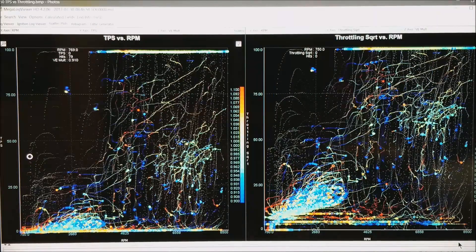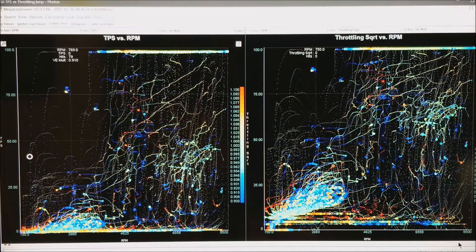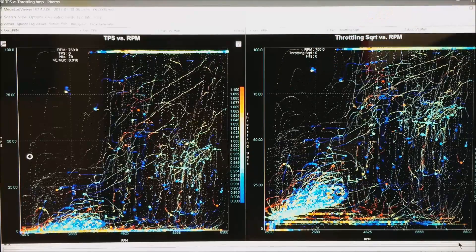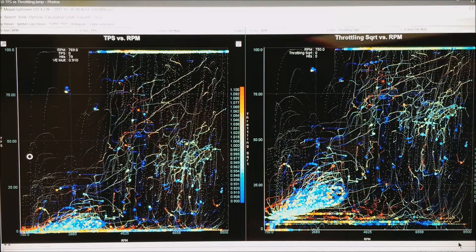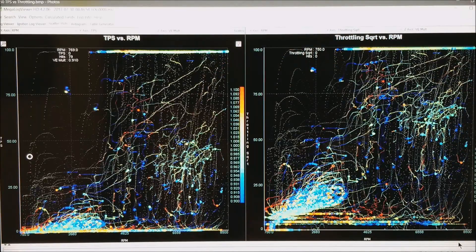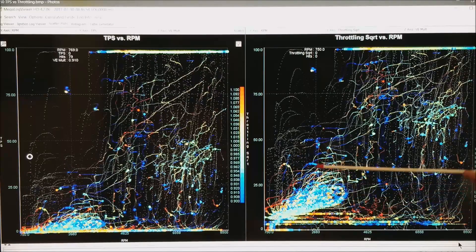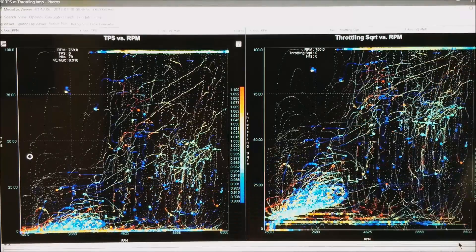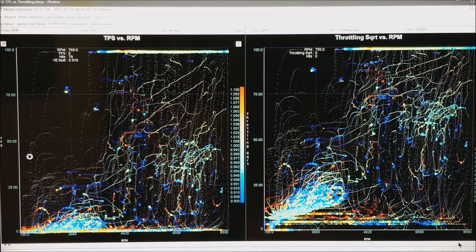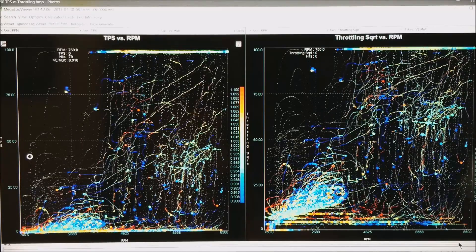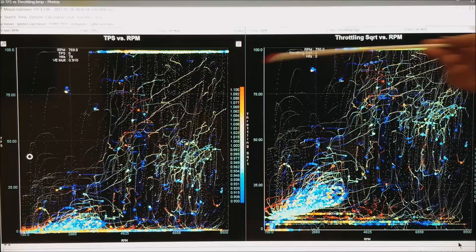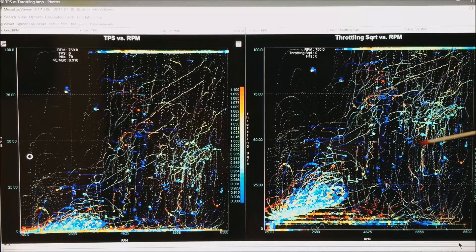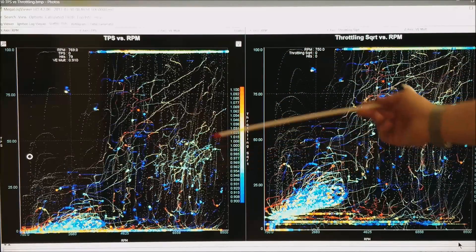I just want to give you a quick example of the difference between TPS and throttling square root. This is exactly the same data on both sides. But notice how much easier it is to see the pattern in the throttle at the low RPM, low throttle range. On the right side of the plot they look almost the same. This area right here happens to be right here.